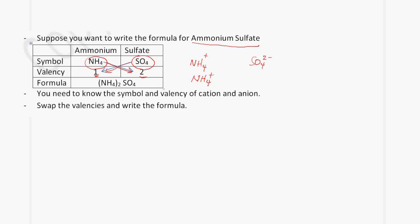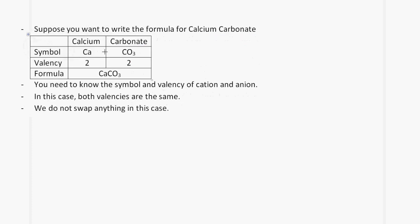Suppose you wanted to write the formula for calcium carbonate. The symbol for calcium is Ca, and the carbonate ion is CO3. The valency of calcium is 2, and the valency of carbonate is also minus 2. Because the valency is the same for both, we don't have to swap anything, and the formula is CaCO3. Calcium is Ca2+ and carbonate is CO3 2−; one calcium ion combines with one carbonate ion.